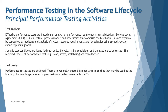Parameters covered include hits per second, throughput, response time, and errors per second, among many others. We go through all of them to understand what the system expects and how we will cover them during execution. This activity may be supported by modeling and analysis of the system's resource requirements or behavior using spreadsheets or capacity planning tools, to determine what environment you need to run performance tests and get the desired output.